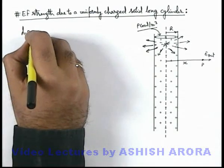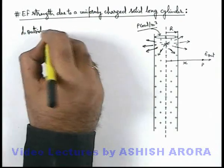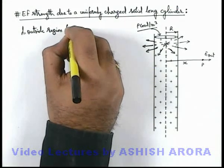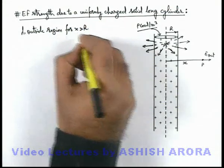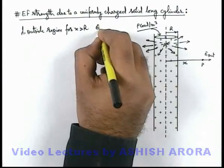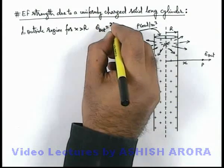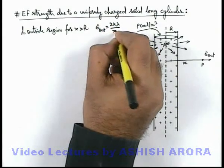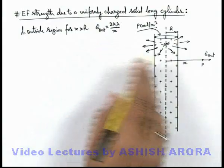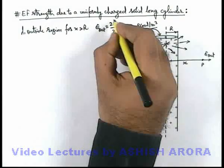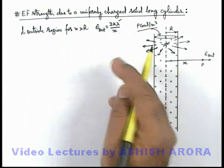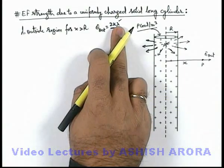For x greater than the radius, electric field can be directly written as 2kλ/x, which is the result we use for a uniformly charged long thread where λ is the linear charge density, that is charge per unit length of the cylinder.